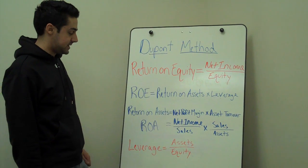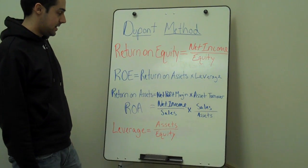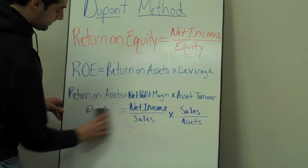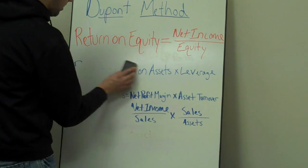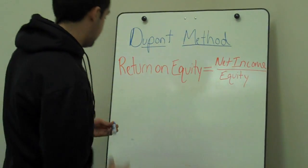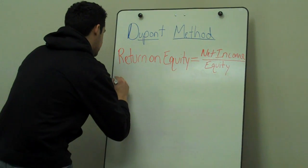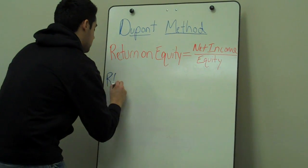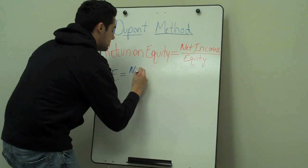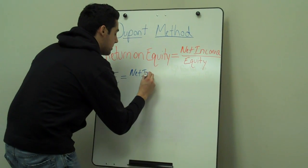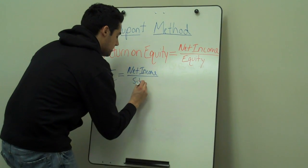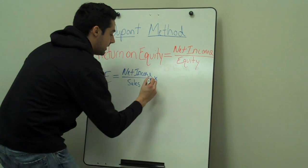What we use for leverage is assets over equity, and that gives us a figure for leverage. Now when we put all these together, we get return on equity equal to your net profit margin multiplied by your asset turnover.